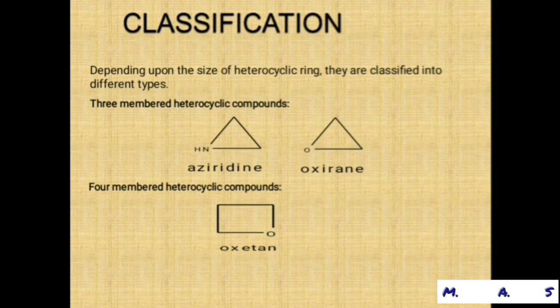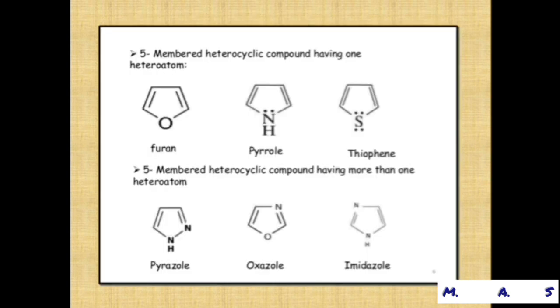Four-membered heterocyclic compounds — these are four-membered rings. Five-membered heterocyclic compounds having one heteroatom — three examples are given, all with five-membered rings.